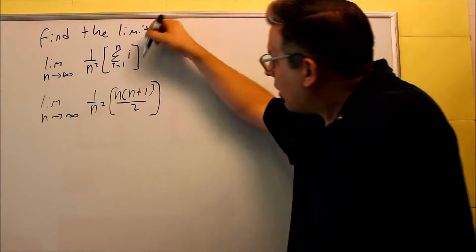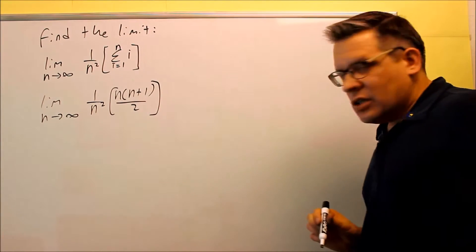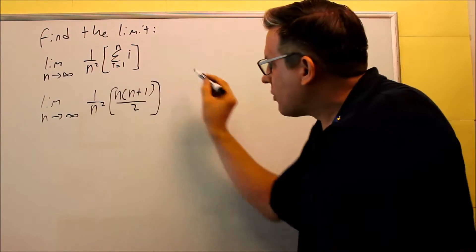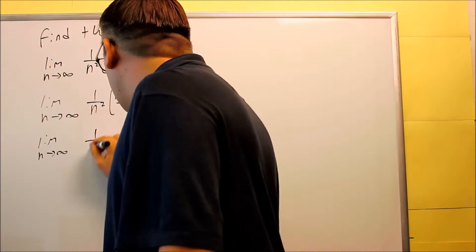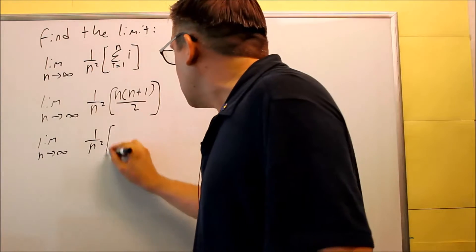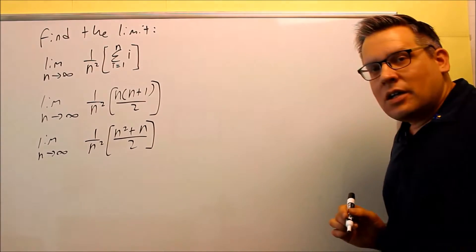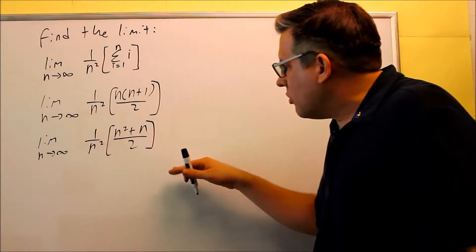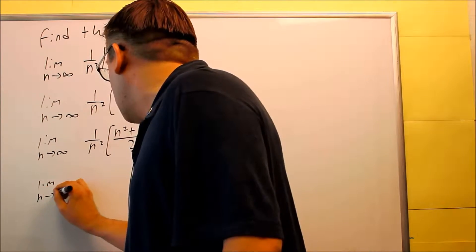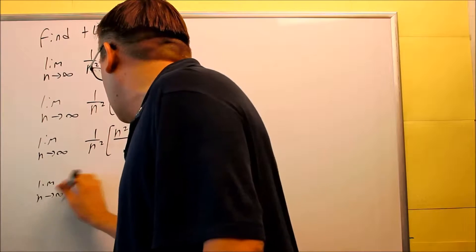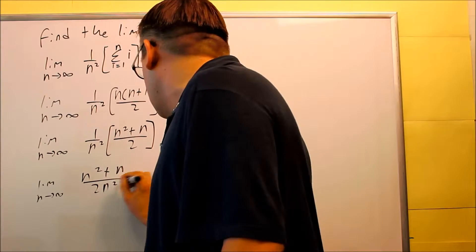That previous video talked about how you can turn these summations into exact sums. Now that we have this complete, we're going to multiply all this out, top and bottom. So if we do that, we have n squared plus n, all over 2. And we're going to keep going, multiplying across the top and across the bottom. So I get limit as n goes to infinity, and it's going to be n squared plus n all over 2n squared.